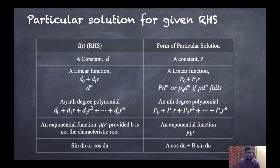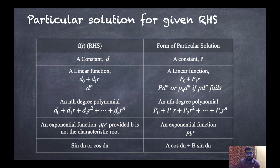Fourth type: an nth-degree polynomial. Whenever we have a polynomial on the right-hand side, that is D0 plus D1·R plus D2·R² up to DN·R^N, then we take an nth-degree polynomial: P0 plus P1·R plus P2·R² up to PN·R^N.